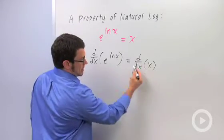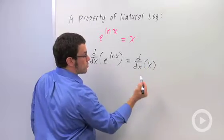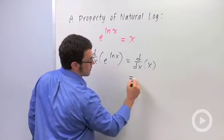So on the right side, you can see that the derivative with respect to x of x is 1. This is just a linear function, its derivative is its slope.